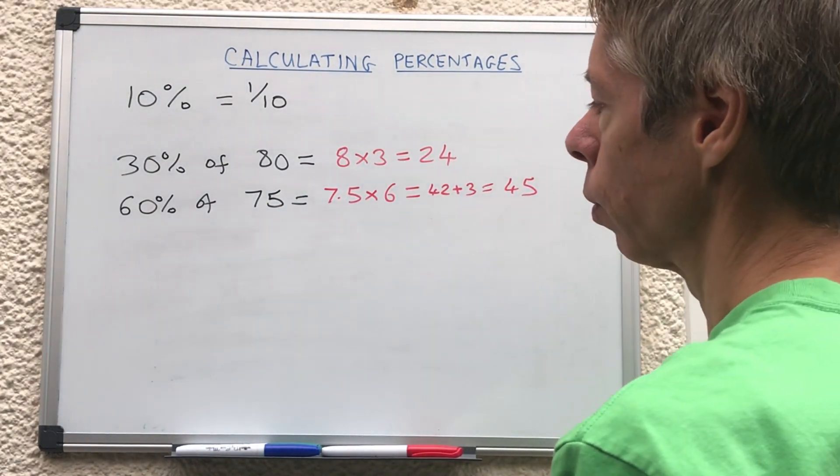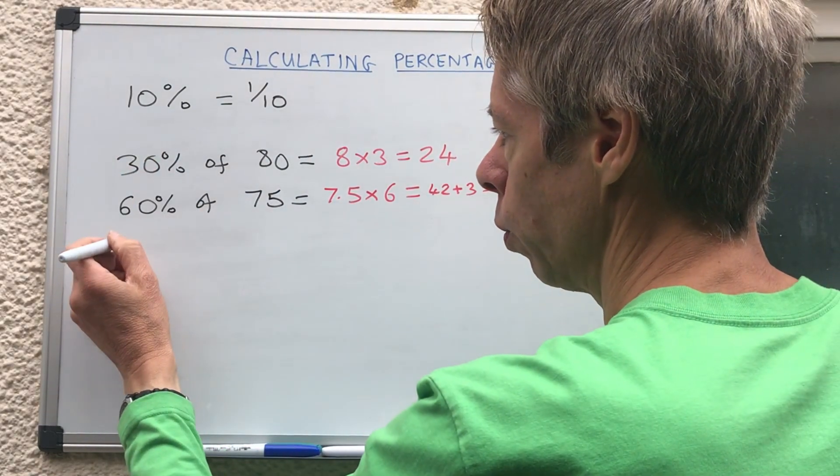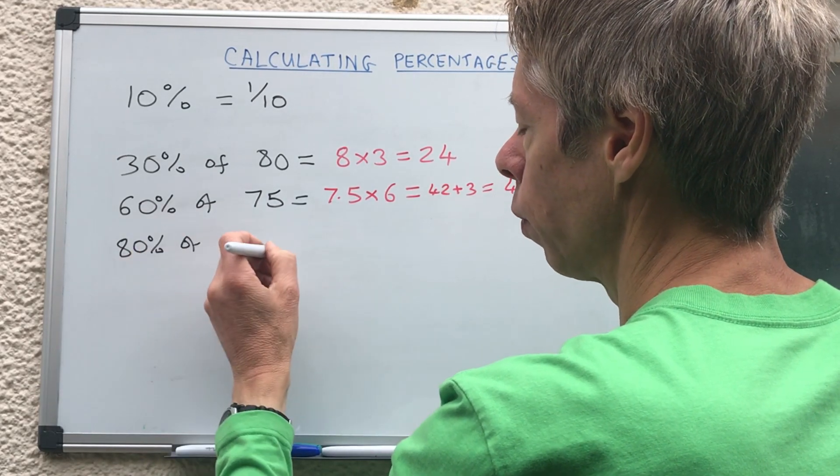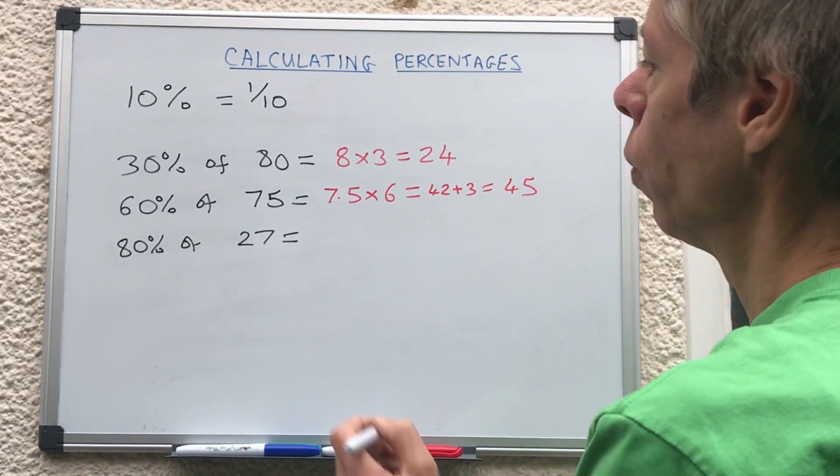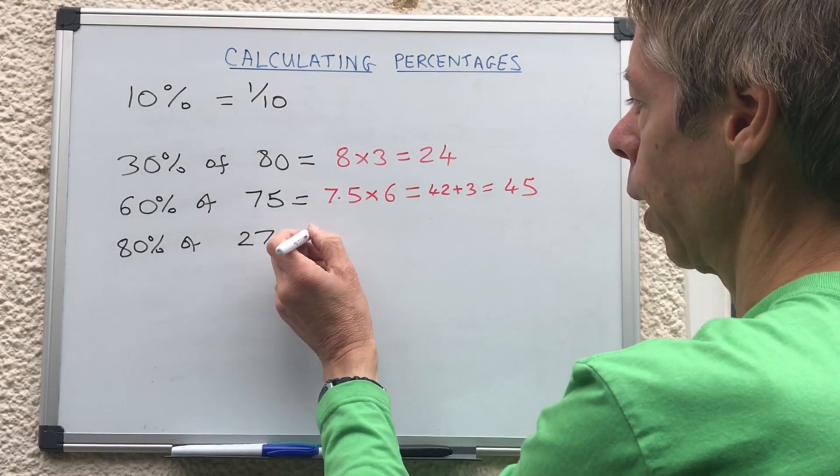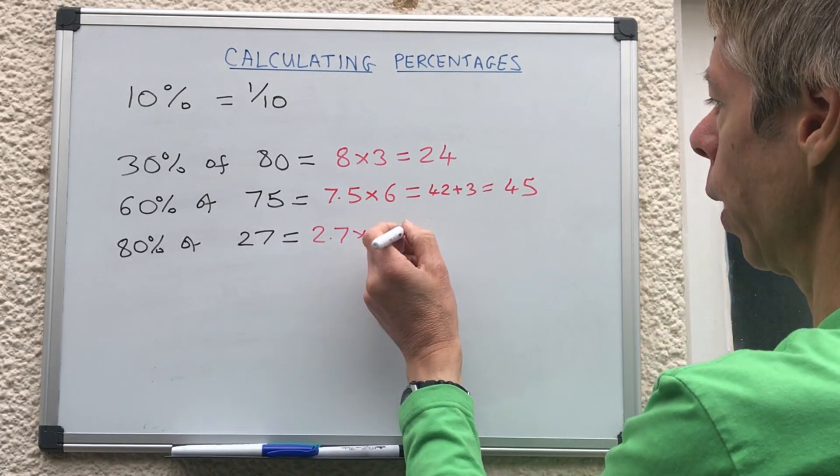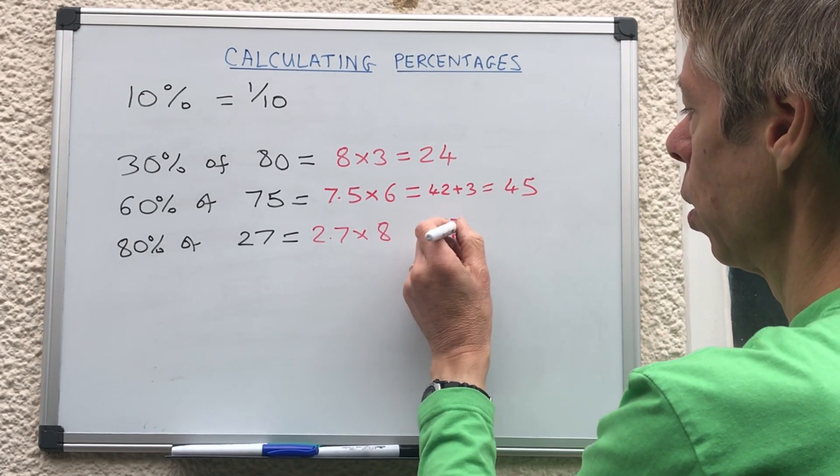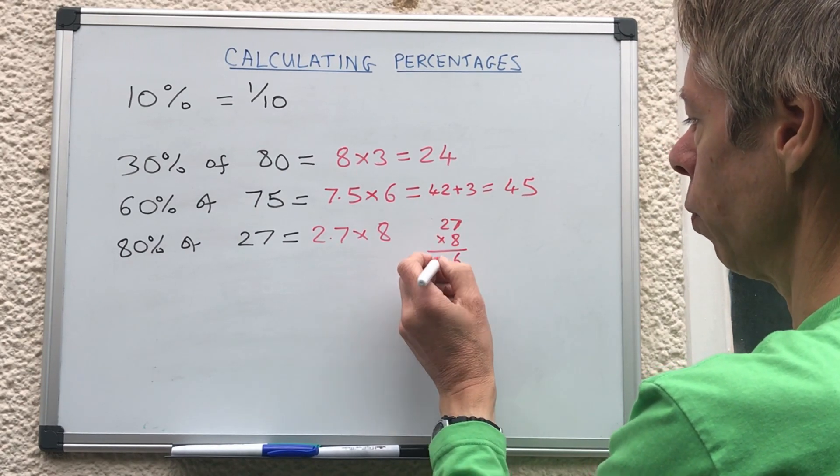One more involving tens of percentage. Let's do 80 percent this time, 80 percent of 27, awkward number but never mind. So first of all we're gonna divide it by 10, we're gonna get 2.7. Now we've got to multiply that by 8, so I think we'll just do a quick 27 times 8. So 8 times 7 is 56, 8 times 2 is 16 plus 5 is 21.